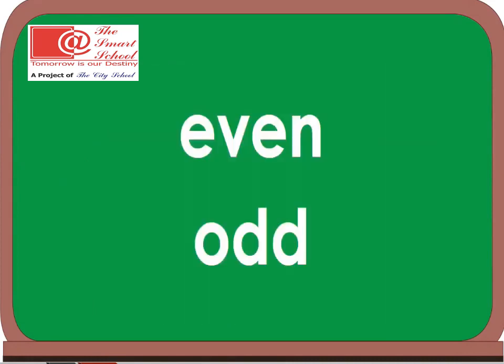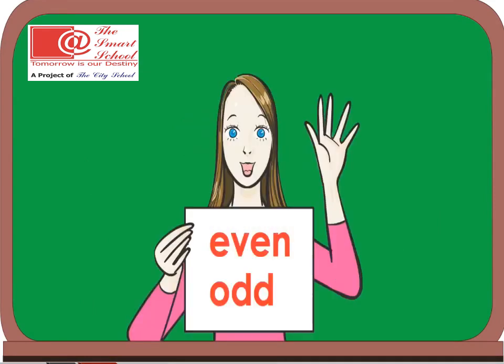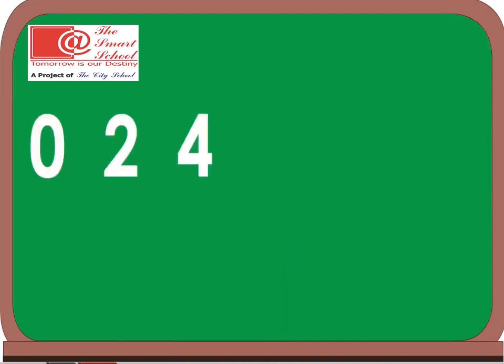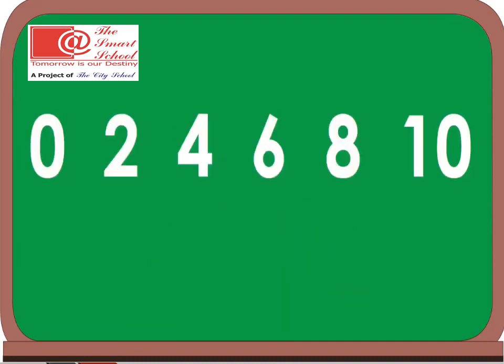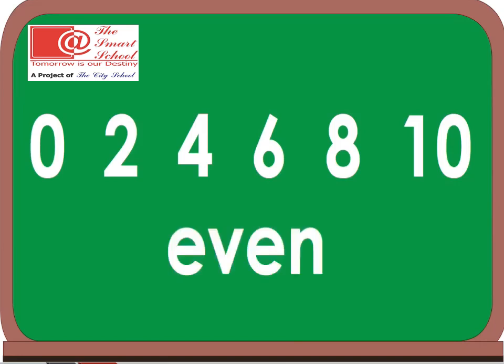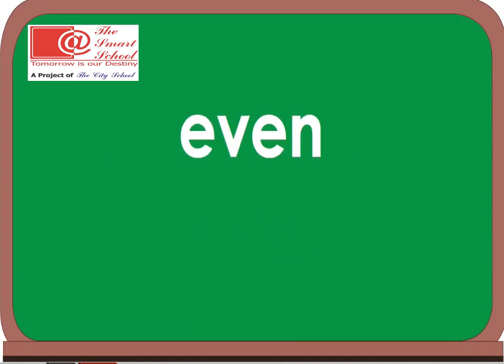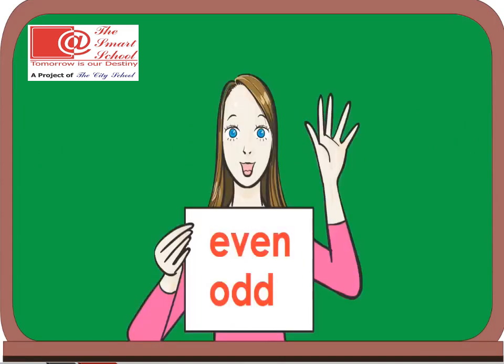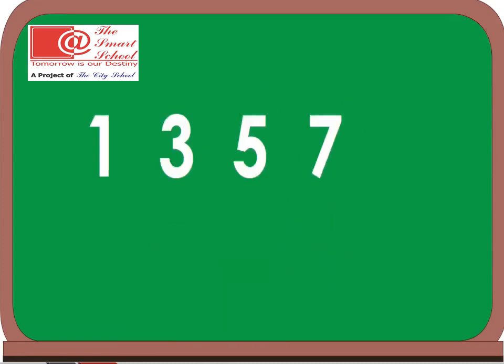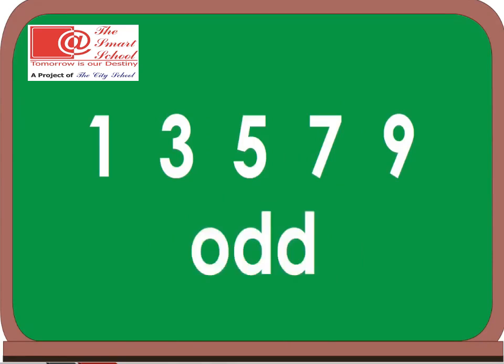Even and odd, even and odd — two different sets of numbers. Zero, two, four, six, eight, and ten are some of our even numbers. One, three, five, seven, and nine are some of our odd numbers.